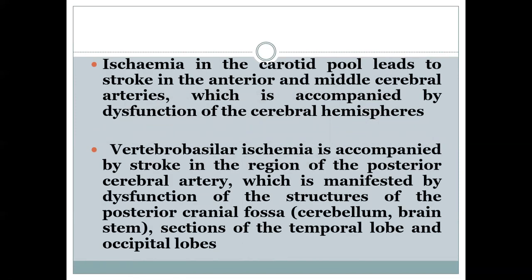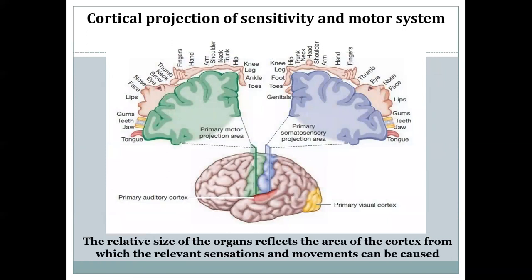Ischemia in the carotid pool leads to stroke in the anterior and middle cerebral arteries, accompanied by dysfunction of the cerebral hemispheres. Vertebrobasilar ischemia is accompanied by stroke in the region of the posterior cerebral artery, manifested by dysfunction of structures of the posterior cranial fossa, as well as sections of the temporal and occipital lobes. That is why, remembering the homunculus picture, we understand what problems a person will have depending on which arteries are affected.